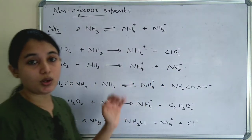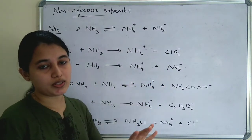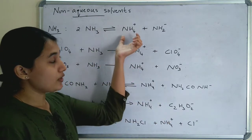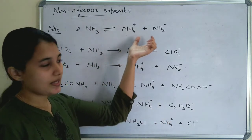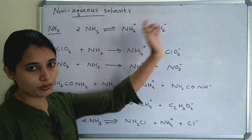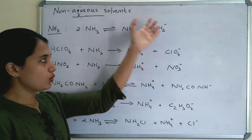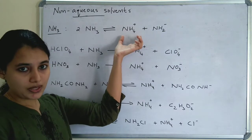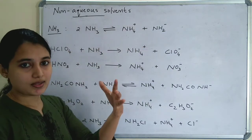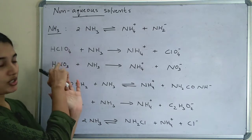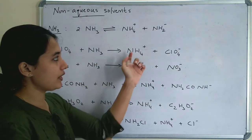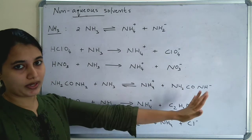In ammonia, the auto-ionization or self-ionization is: 2 NH3 → NH4⁺ + NH2⁻. For example, HClO4 + NH3 → NH4⁺ + ClO4⁻. When NH4⁺ is obtained, the compound behaves as an acid.